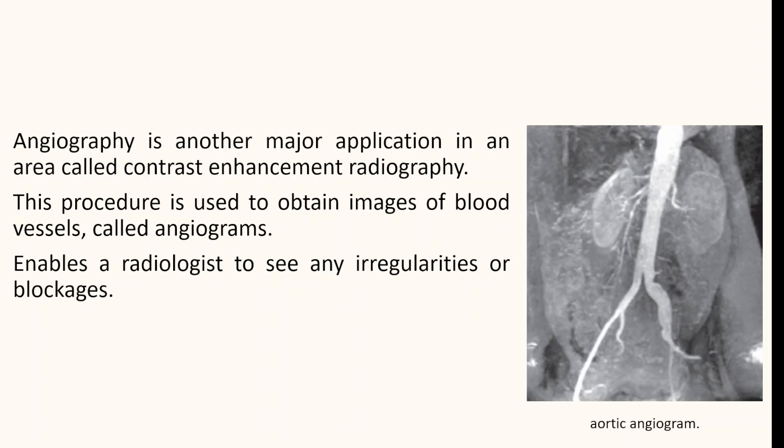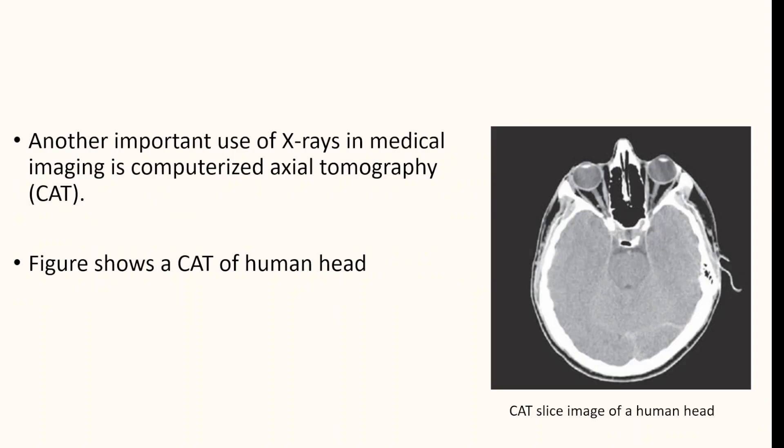In this figure, you can also see the hollow tube, or catheter, that is being inserted into the blood vessel on the lower left of the image. Another important use of X-rays in medical imaging is computerized axial tomography. A CAT image is a slice taken perpendicularly through the patient, and numerous slices are generated as the patient is moved in the longitudinal direction. The ensemble of such images constitutes a 3D rendition of the inside of the body. The image here shows a CAT scan of a human head.